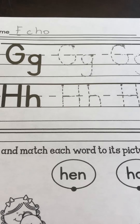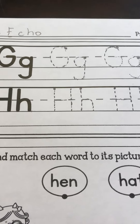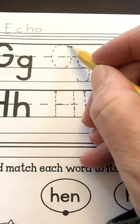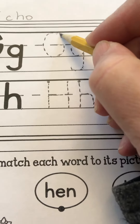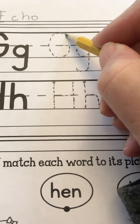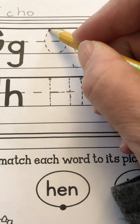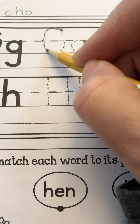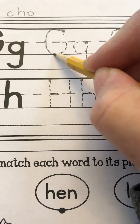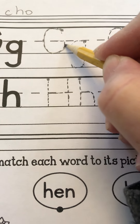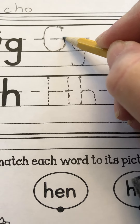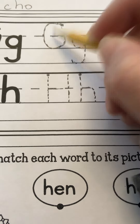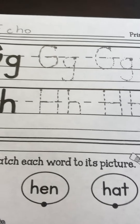G, game, G. Now when you make a G, you point to the skyline, fly back on the skyline, around to the grass line, up to the plain line, and back straight on the plain line. G, game, G.